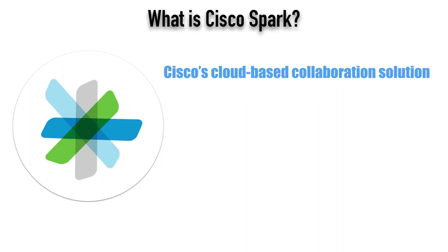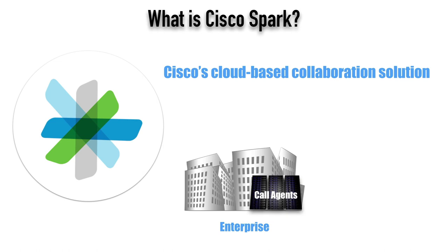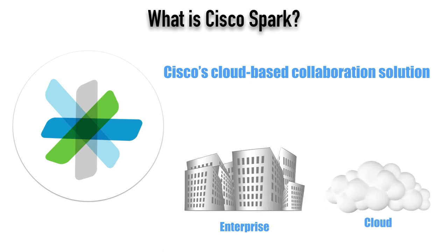Collaboration services are evolving much like data center services. Remember the days when we used to have data centers in our company, and now maybe they're living out on the cloud somewhere — we're using Amazon AWS or something like that. We could do something similar with our call agents. Maybe we've got a cluster of Cisco Unified Communications Manager servers at our site. Instead of having call agents at our site, we could subscribe to a service where call agents live in the cloud. And that's what Cisco Spark can do for us.